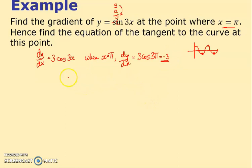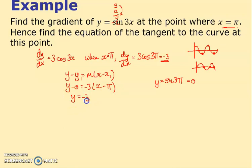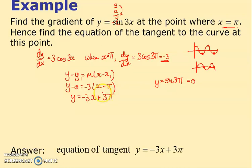Find the equation of the tangent at x = π. I need a y value: y = sin(3π) = 0, since sine is zero at all integer multiples of π. So the point is (π, 0). Using y - y₁ = m(x - x₁): y - 0 = -3(x - π), giving y = -3x + 3π.